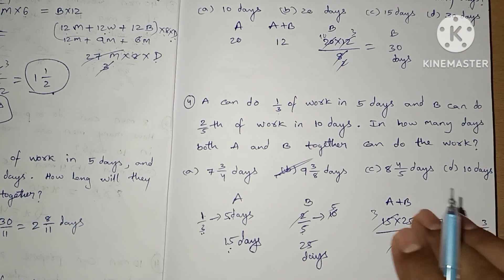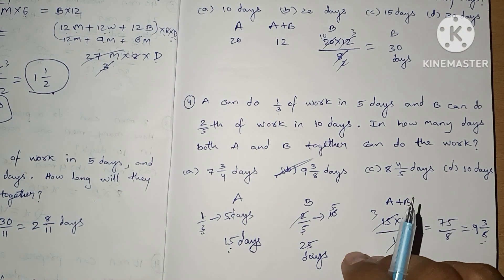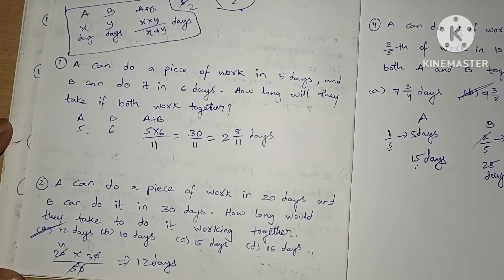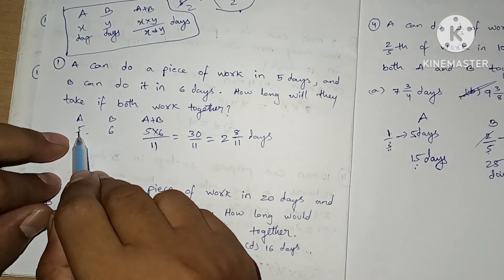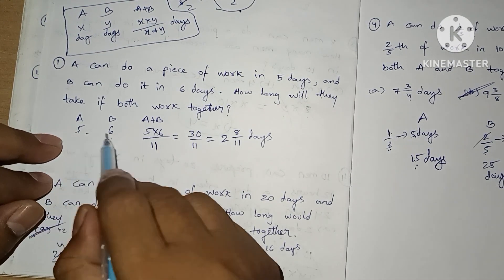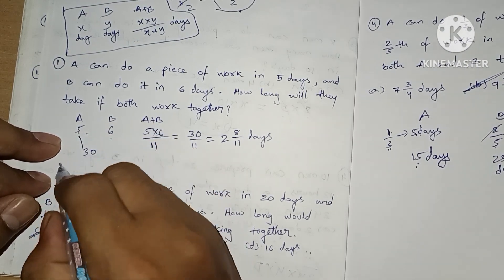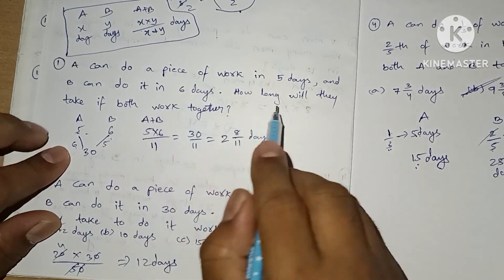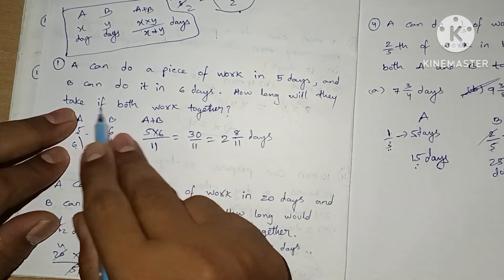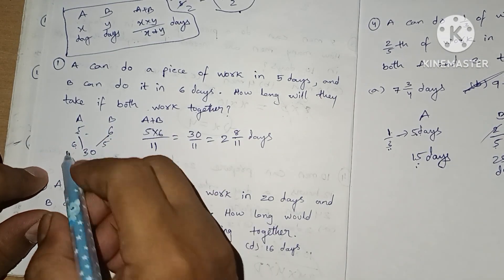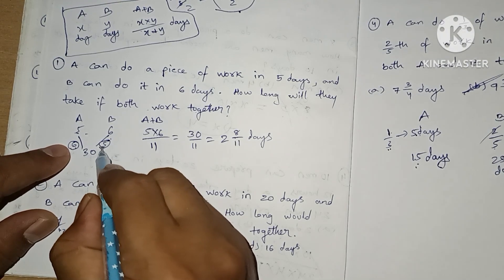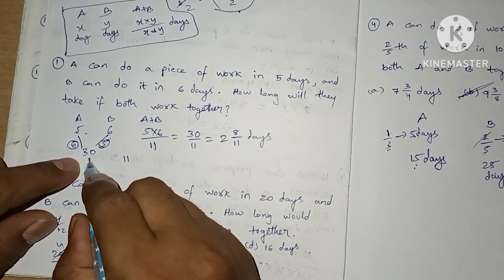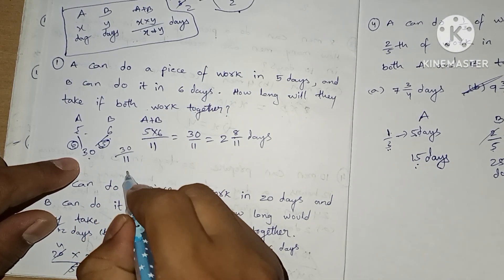Actually, I also use the LCM method. Sometimes I use the formula method and sometimes the LCM method. Let's see what the LCM method is. A can do in 5 days, B can do in 6 days. LCM of these two is 30. Their efficiencies are 6 and 5 respectively. Total efficiency is 11. To complete 30 units, answer is 30/11 = 2 and 8/11 days.